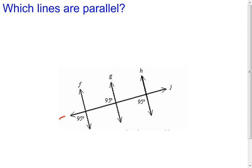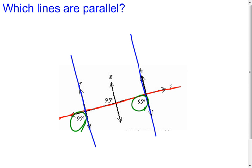I only have one more pair to check. Using line j as the transversal and totally ignoring line g, I compare line f and line h. I see a 95-degree angle at each intersection — those are corresponding angles this time. If corresponding angles are congruent, the lines are parallel. Therefore line f is parallel to line h, and those are the only two parallel lines in the picture.